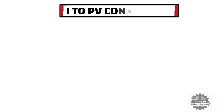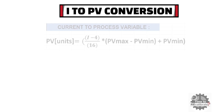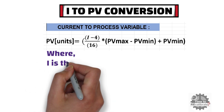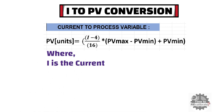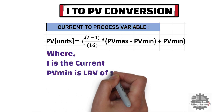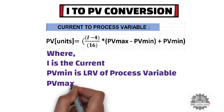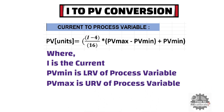In this last section, you will learn how to find the process variable value when the current value is given. As you can see, this is the standard formula to convert current into process variable. In this equation, I is the current. PVmin is the lower range value of the respective process variable range, and PVmax is the upper range value of the respective process variable range.